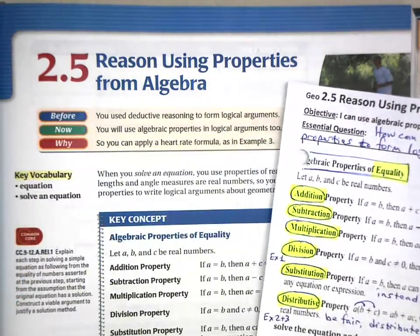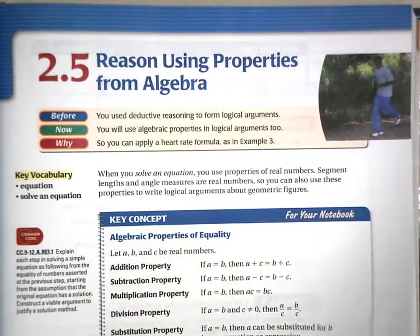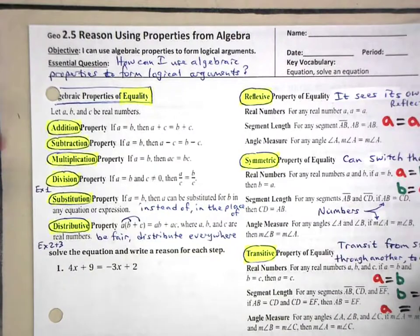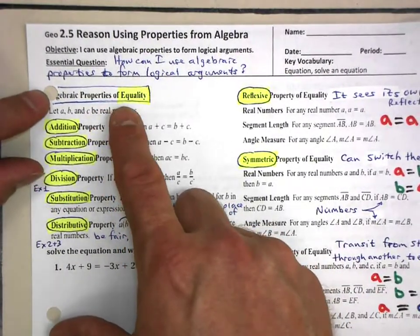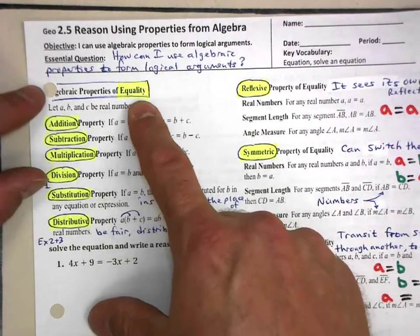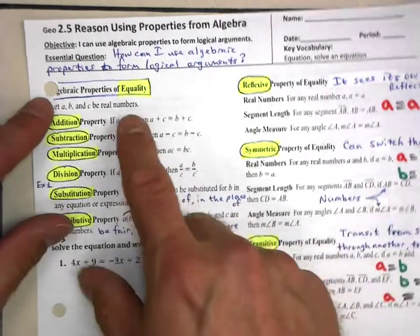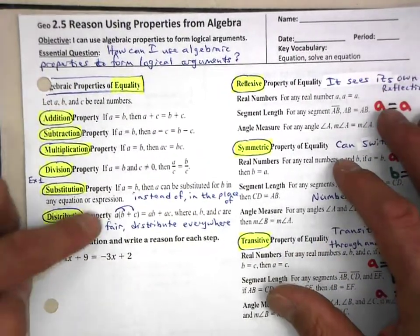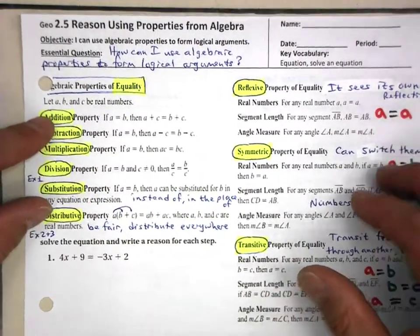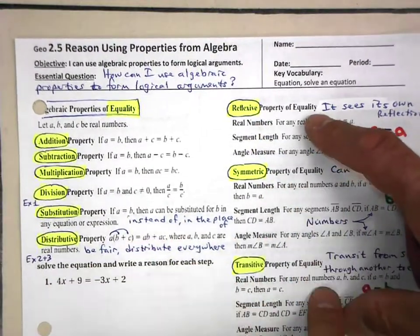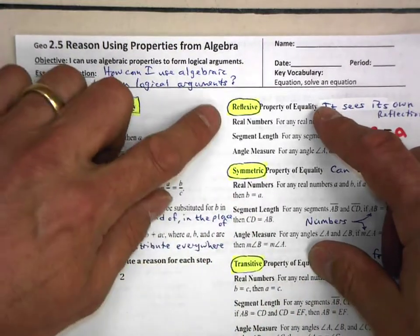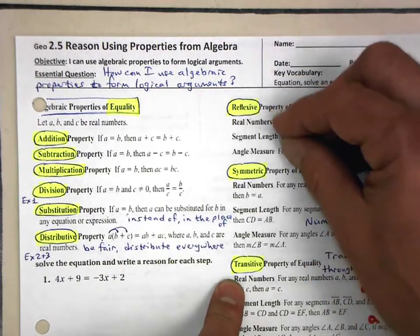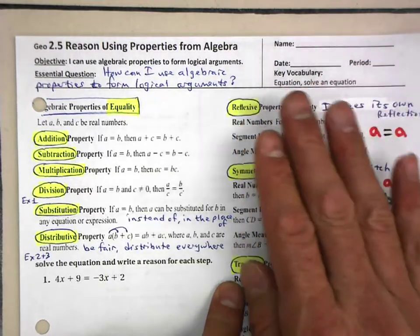What I've done is taken all of these algebraic properties of equality, and also later in the book, and put them together for you in your notes. These are algebraic properties of equality, meaning there's going to be an equal sign — two things equal to each other. There are properties including the reflexive property, symmetric, and transitive. These are just little examples of types of reflexive properties and so forth.